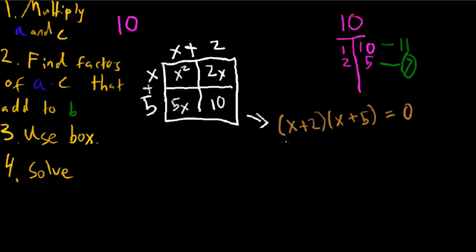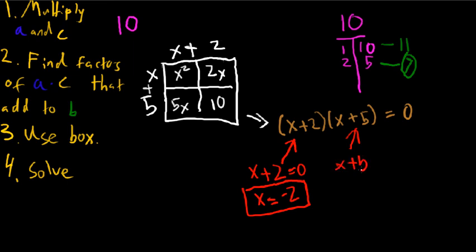Now it's just a matter of solving these factors, which is actually a lot easier when the coefficient on x is just 1. x plus 2 equals 0, so x is negative 2. That's one answer. And then x plus 5 equals 0, so x is negative 5.